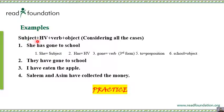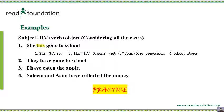Now let's practice with example sentences. Remember the formula: Subject + Helping Verb + Verb + Object. Here is the first example: 'She has gone to school.' 'She' is a singular pronoun, so we use 'has' after it. 'Gone' is the third form of 'go' — go, went, gone. After that comes the object: 'to school.'